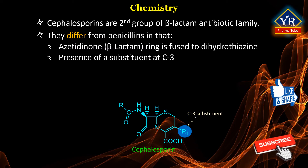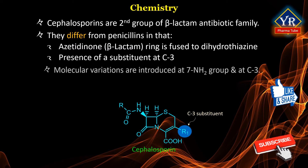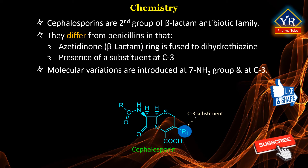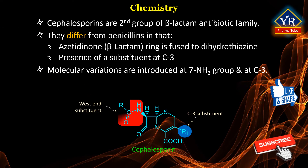The other more significant difference is the existence of a substituent at position 3 of the fused ring system. This allows for molecular variations to be introduced at the 7-amino group as in penicillins, as well as to effect changes in properties by diversifying the moieties at position 3.